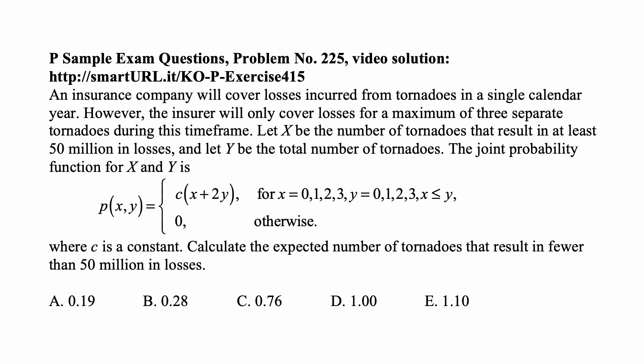Here's a problem for today for Exam P on probability. An insurance company will cover losses incurred from tornadoes in a single calendar year. However, the insurer will only cover losses for a maximum of three separate tornadoes during this time frame.